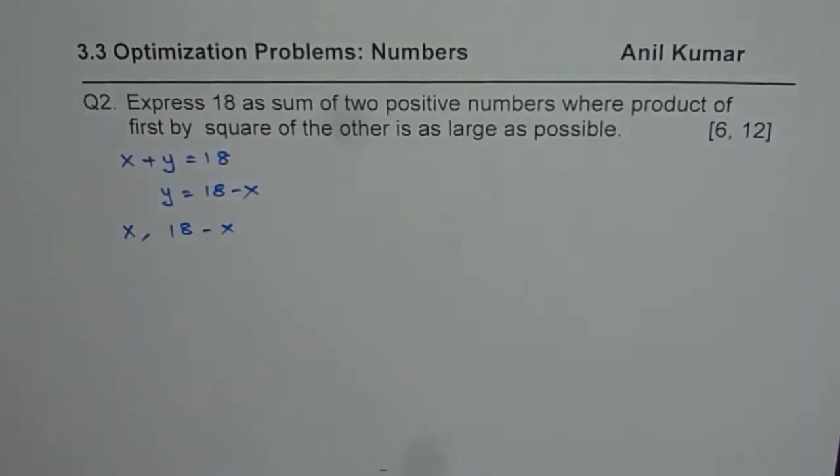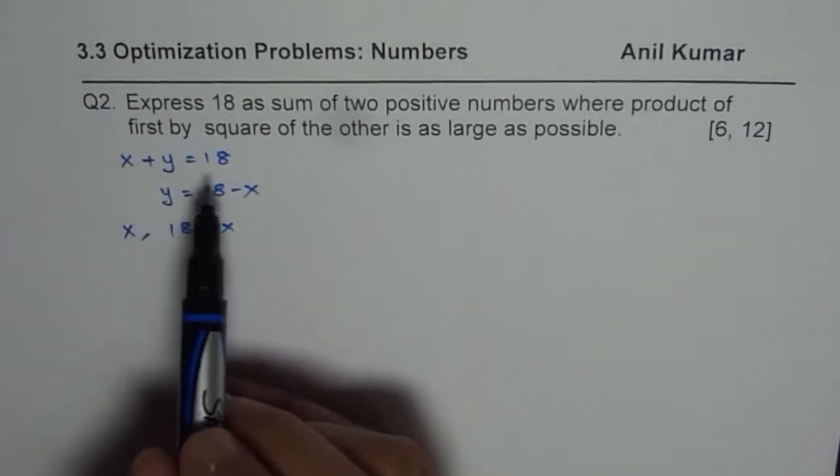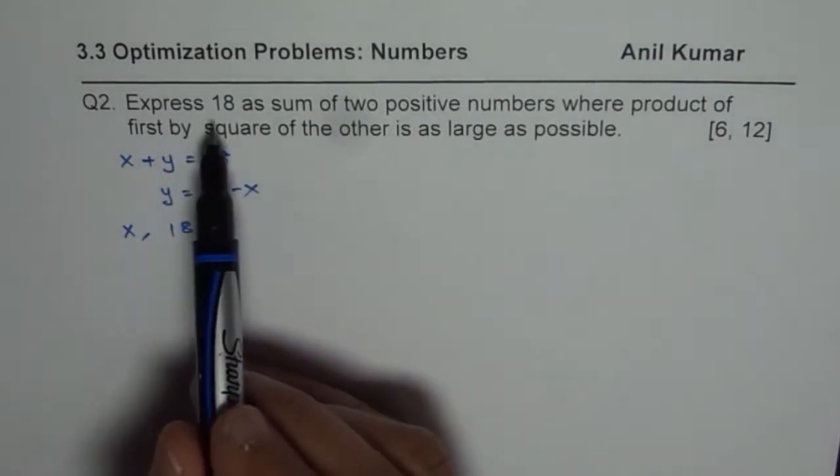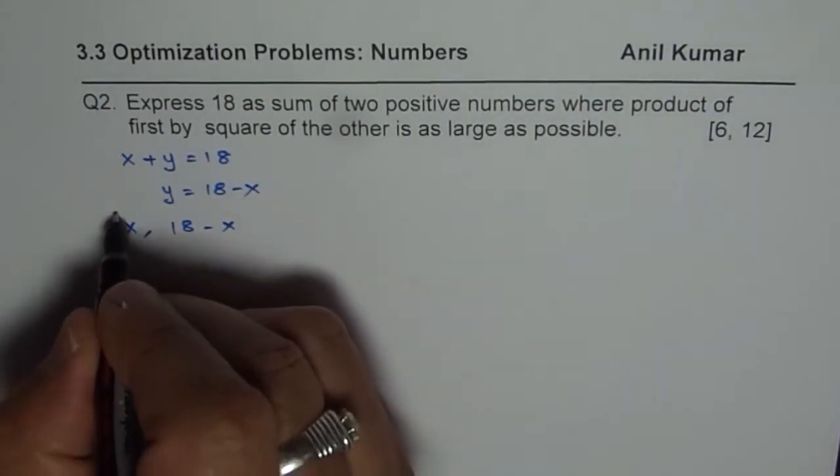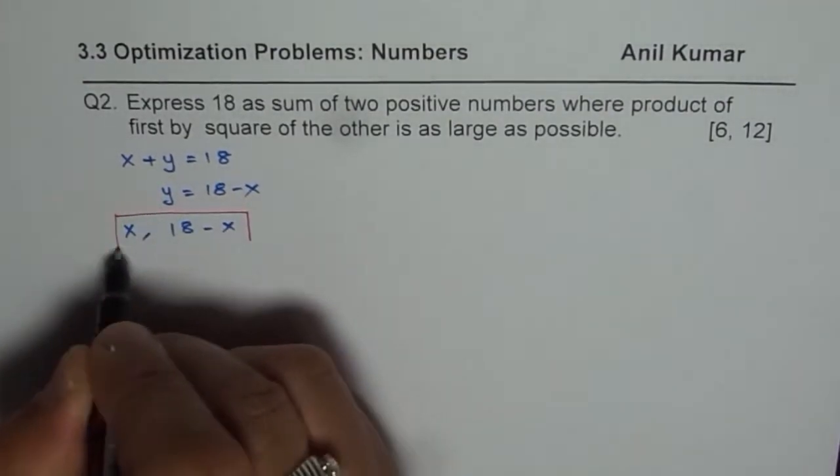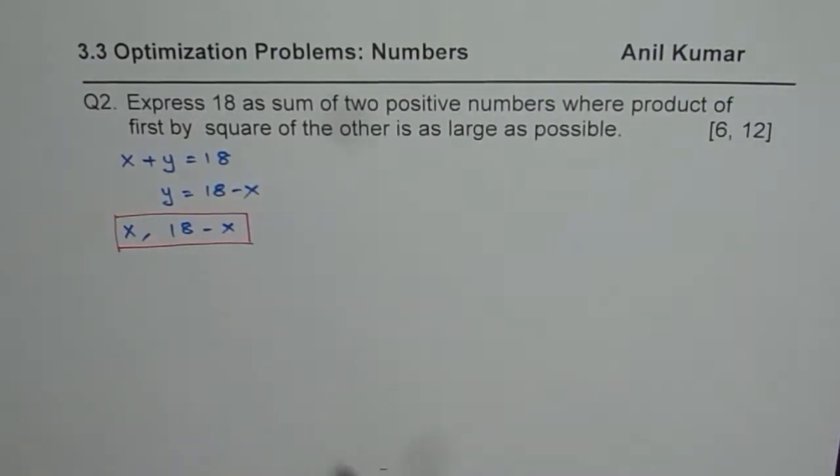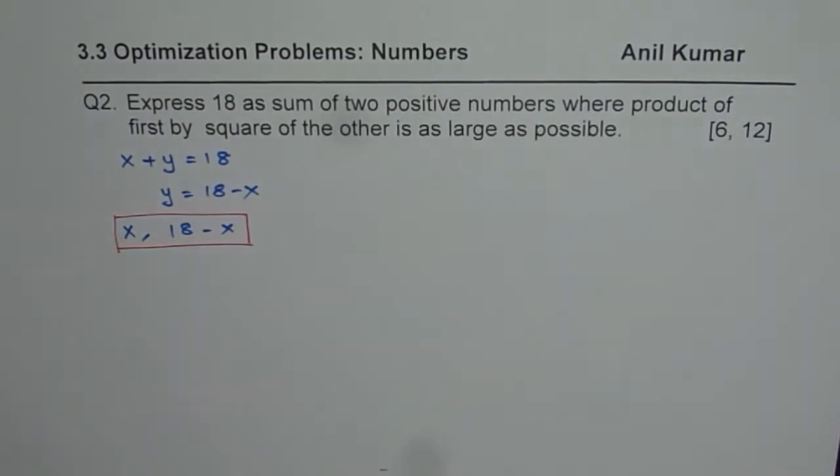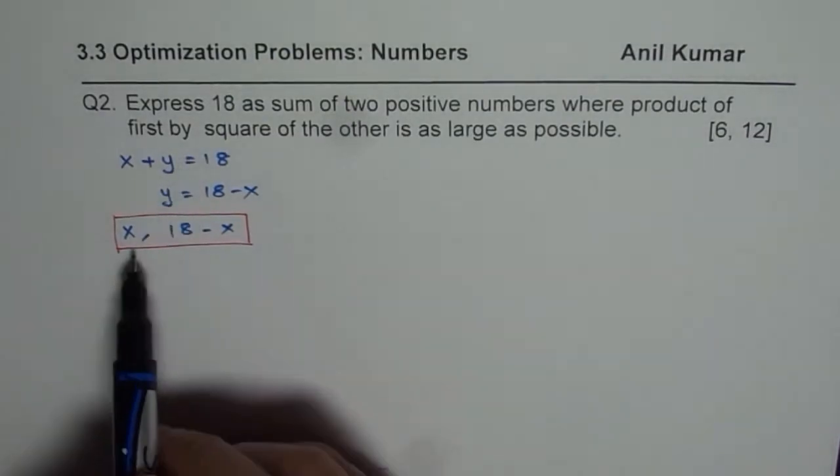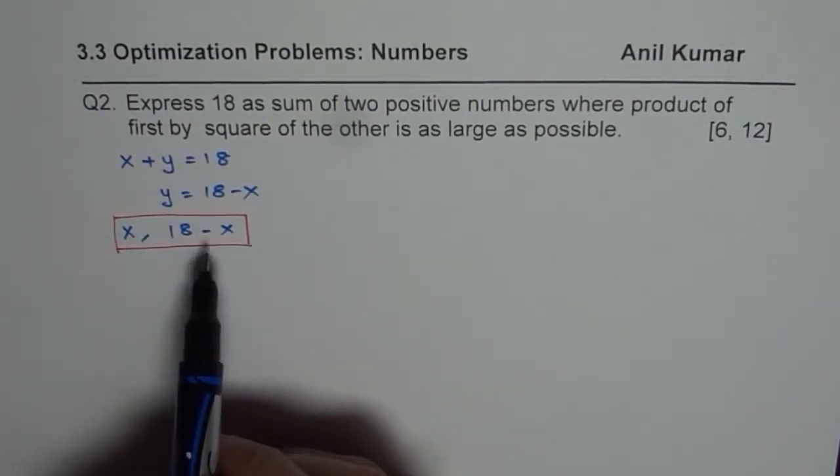You get the idea. In a sum question where the sum is 18, you could have taken the 2 numbers as x and 18 minus x to start with. You save time and simpler equations. So you could start with 2 variables or write your equation with 1 variable. It is up to you.